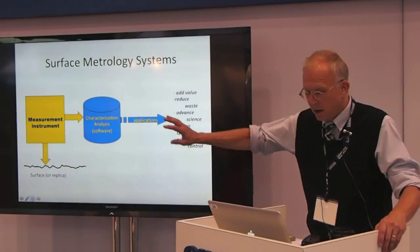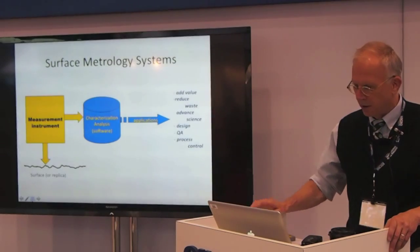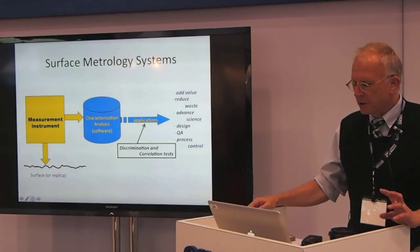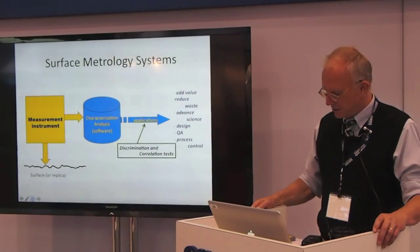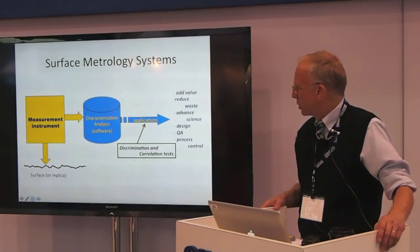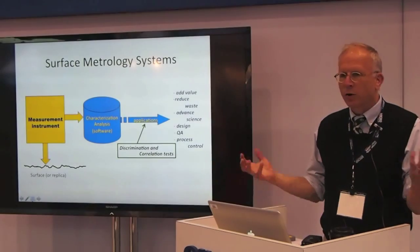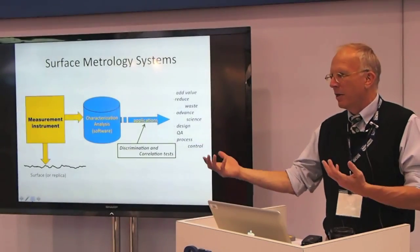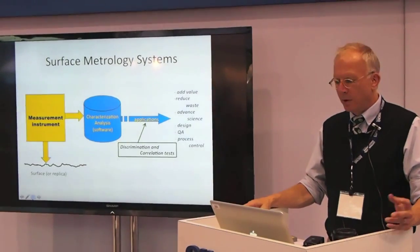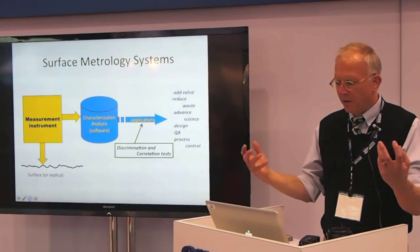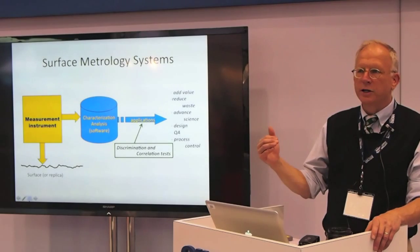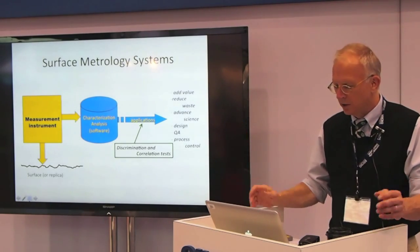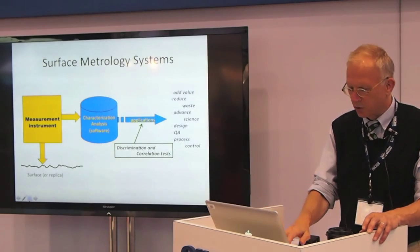We're going to be talking about measurement — the first part. As we'll get into in the third talk about discrimination and correlation: how can we tell two surfaces apart that we know to be different from how they were machined or how they're behaving? That's where value is, or how can we get a correlation between a manufacturing process and the surface we're getting, for process control.